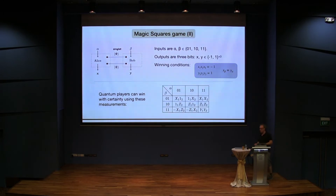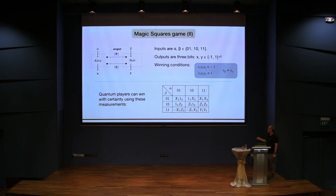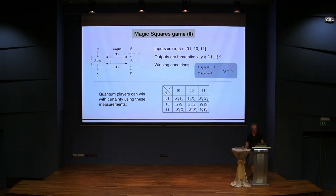This is an example of a non-local game. The inputs are given by numbers one, two, three indicating which row or column; the outputs are these minus one and ones, three of them. Then we have the winning conditions. There is a quantum strategy that can win this with certainty. This quantum strategy means they will do Pauli measurements — these three commute, so you can do them at the same time, giving the three values — and same for columns and rows. These measurements are done on both sides by Alice and Bob on two maximally entangled states they share.